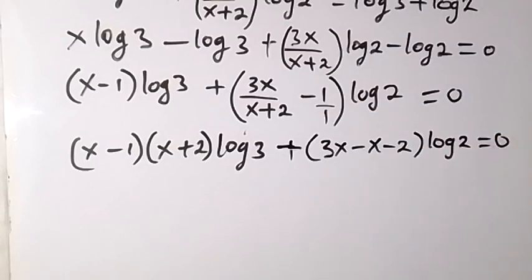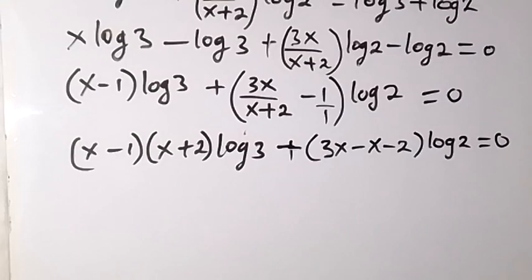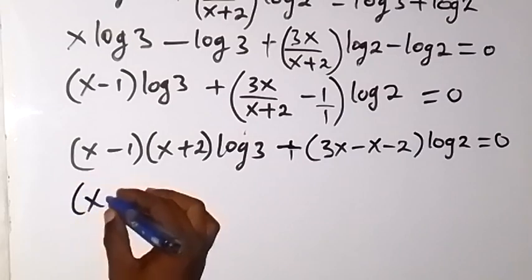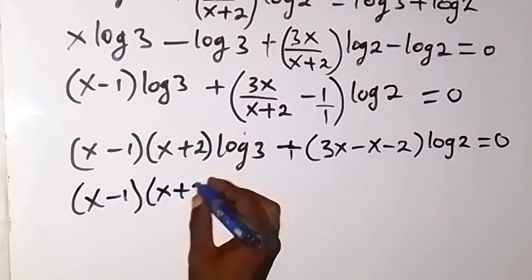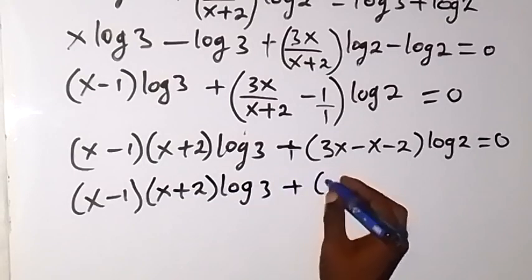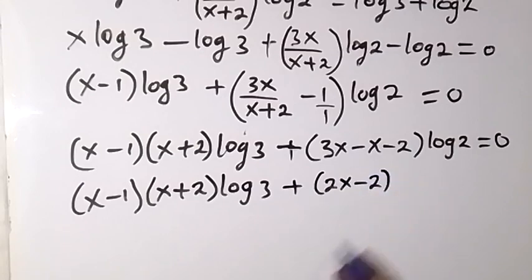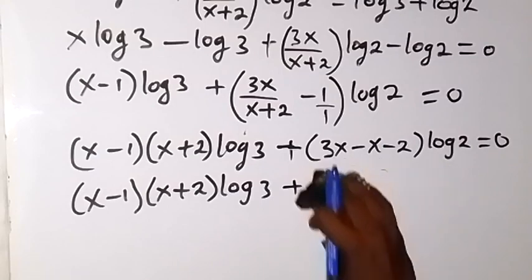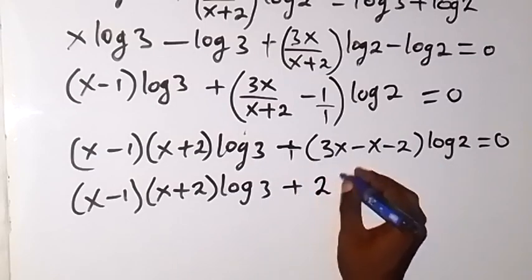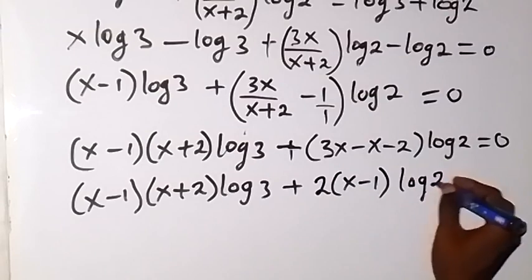From here, 3x minus x gives 2x, and 2x minus 2 remains. So we have (x minus 1)(x plus 2) log 3 plus (2x minus 2) log 2 equals 0. Since 2x minus 2 has a factor of 2, we can bring 2 out, giving 2(x minus 1) log 2 equals 0.